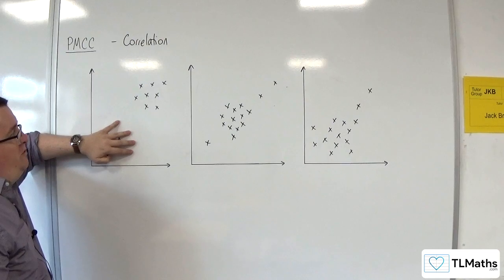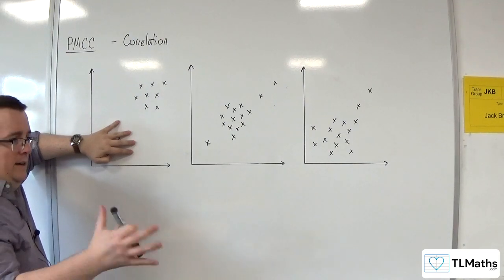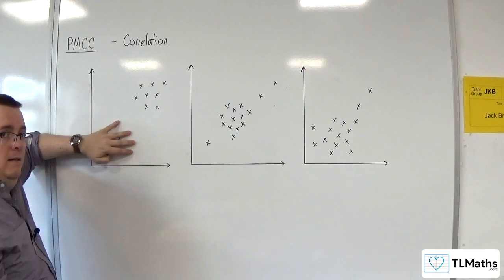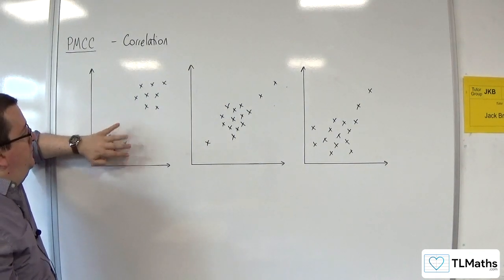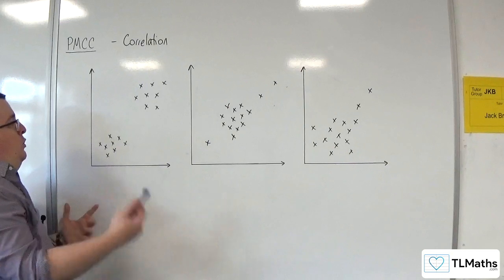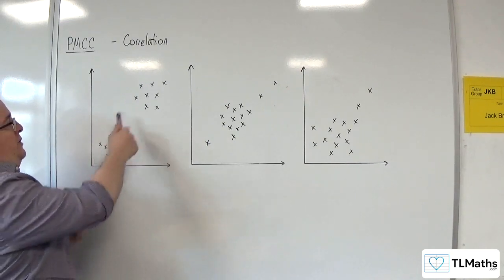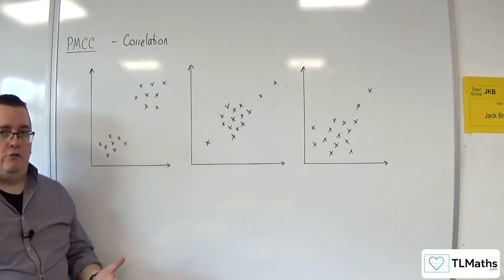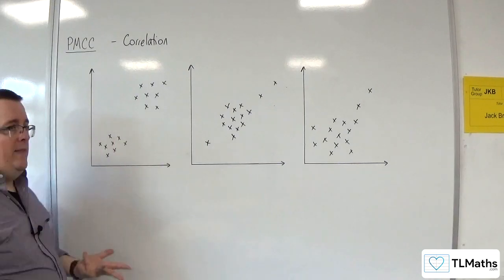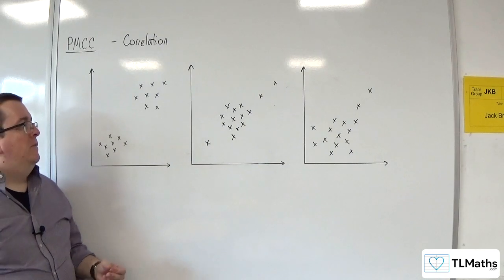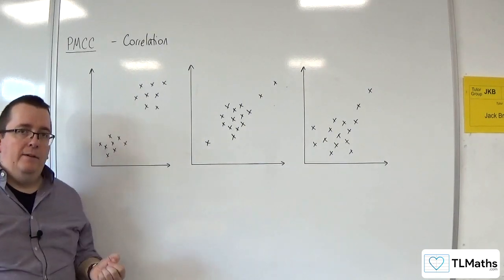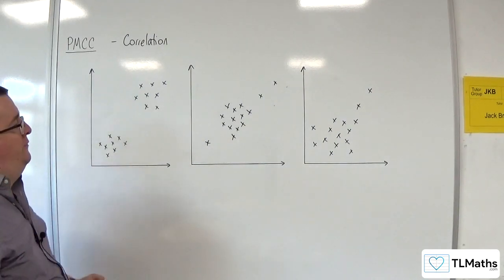But you would also expect that neither height or IQ, height and IQ to be positively correlated. You would expect no correlation between the two. So you could actually have two distinct groups where there is no correlation, but when plotted together, it looks like there is a positive correlation. So that's where you can be misled by the data if you're not careful.